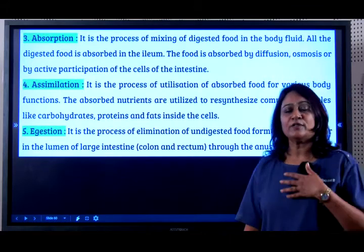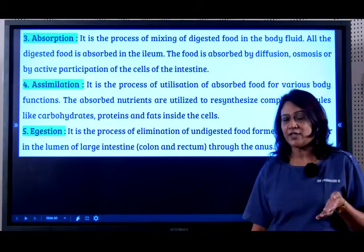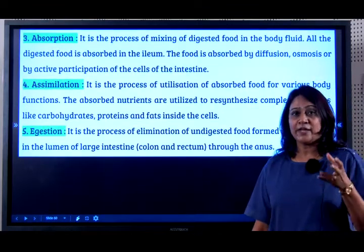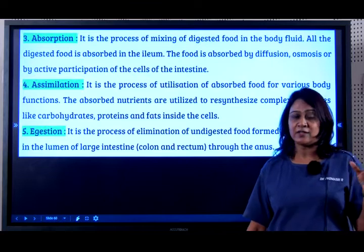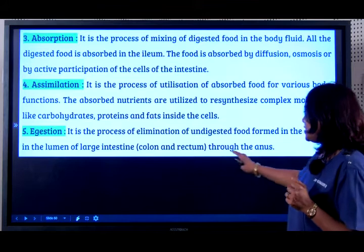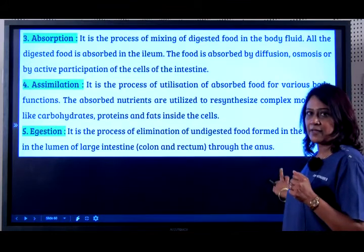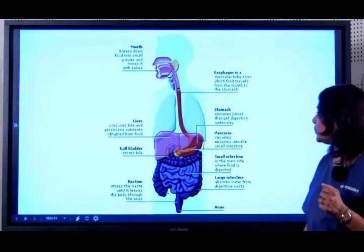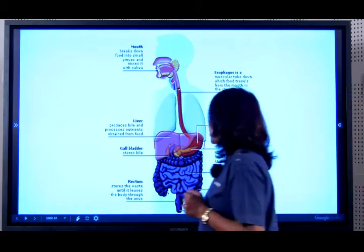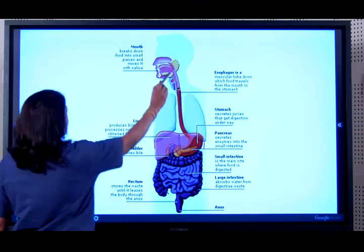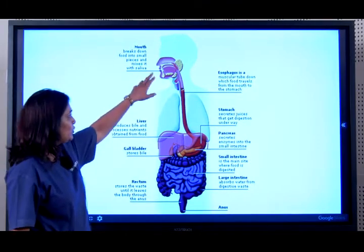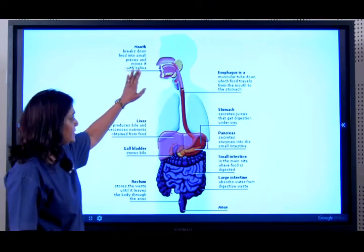This process is called assimilation. The final step is excretion. Whatever food is not digested goes into the large intestine, where water essential for the body gets absorbed. A solid mass is formed and it is excreted through the colon, the rectum, and finally through the anal opening. Now for a quick recap: the mouth breaks down food into smaller particles as it mixes with saliva through the salivary juice containing the salivary enzyme.